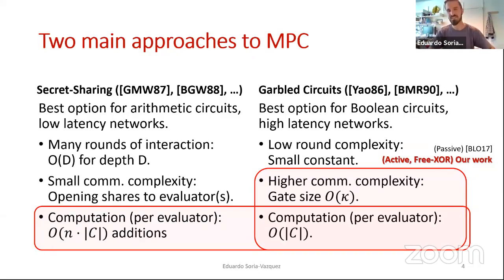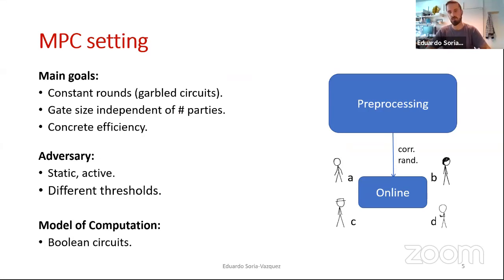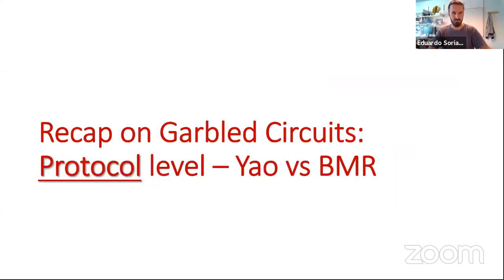If you have n evaluators we achieve the same complexity as in secret sharing. If you have a single evaluator of the garbled circuit, then you have better complexity. Our goals are: constant-round protocols using garbled circuits, gate sizes independent of the number of parties, concrete efficiency, and active adversaries — supporting both dishonest majority full threshold and smaller thresholds.